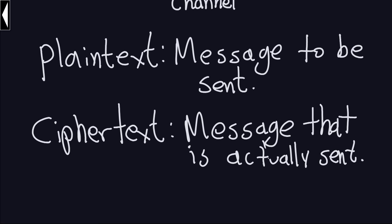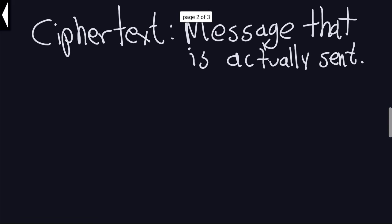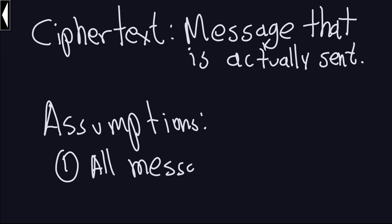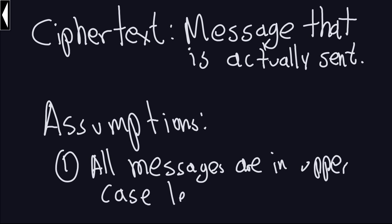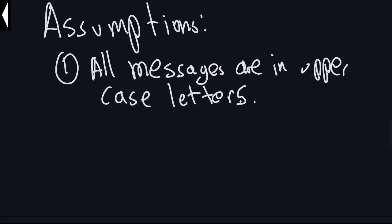There are a couple of important definitions and assumptions to mention. Both the plain text and the ciphertext will assume that all the messages are going to be uppercase letters, and all of them will come from the English alphabet. Assumption number one is that all messages are in uppercase letters. Of course, this doesn't have to be the case when you actually send messages — we're making this assumption just to make things a little bit simpler. You can send messages with uppercase, lowercase, and other characters, but to simplify the examples, we're going to use plain text that is all in uppercase.